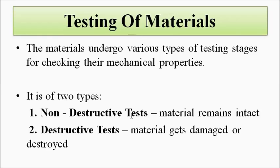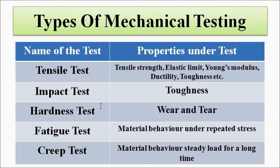In destructive tests, a small sample piece of that material is taken and at the end it will get damaged — it is tested with the intention of taking it to the extreme point, so it will get damaged or destroyed in the end. The various types of mechanical testing done for the testing of mechanical properties of engineering materials are the following.